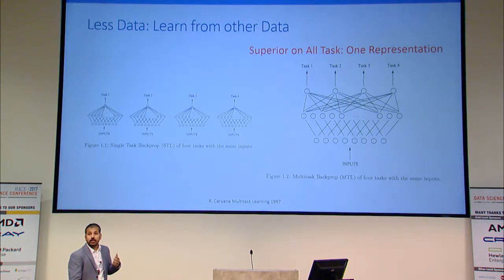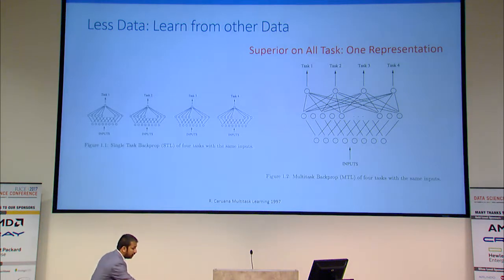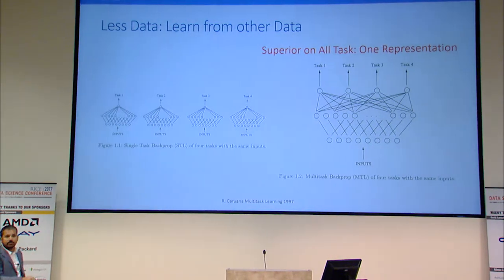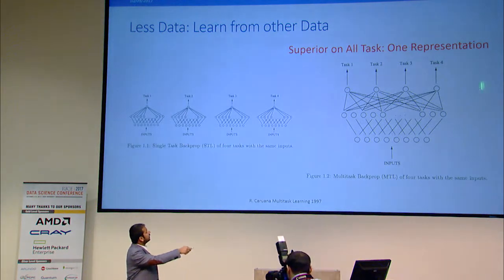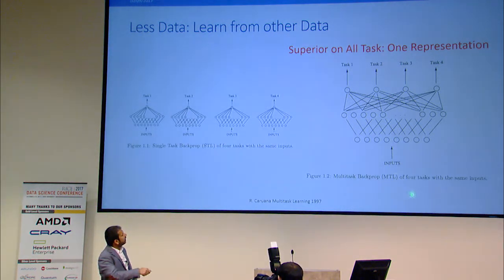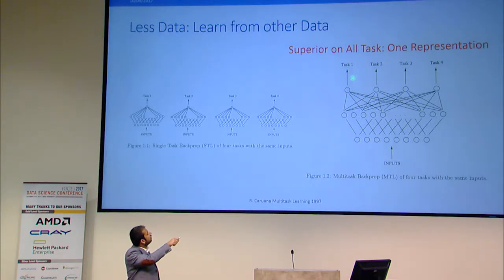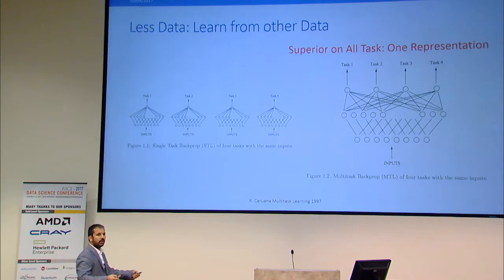One common complaint with deep learning is that it requires lots and lots of data. One solution is to use other data. There is a paper from 1997 showing that if I have tasks like predicting diabetes, obesity, cancer, I could train models individually on different data — but rather, what you should do is train a bigger model, feed everything in, and predict all the tasks simultaneously. The gradients from one task will help another task because there is a common representation, and you get accuracy superior on all tasks.